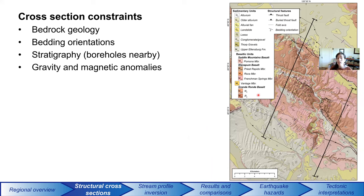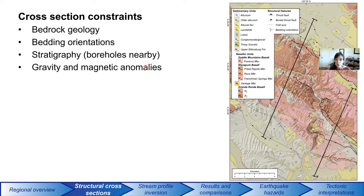The two cross sections I've created are A to A prime — developed to capture deformation across the Yakima Canyon region — and B to B prime, a shorter cross section specifically focused on the Selah Butte anticline and what that structure looks like at depth. The constraints used to create these balanced cross sections come from bedrock geology, bedding orientation with strike and dip markers indicating dip of the basaltic units, and stratigraphy generally from nearby boreholes.